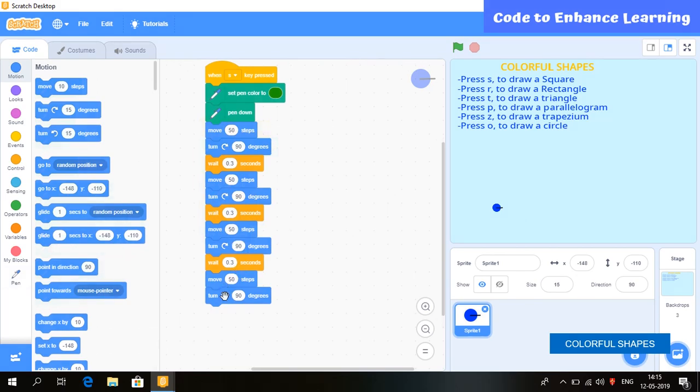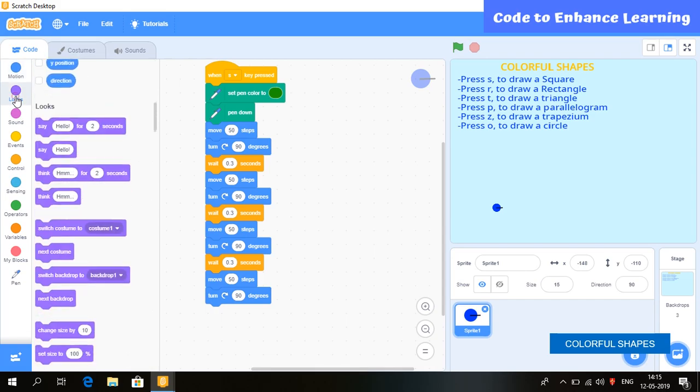Here, you can see the code for drawing a square is done. Now, we want to see it's a square written for 2 seconds just after drawing a square. So, we will select this block.